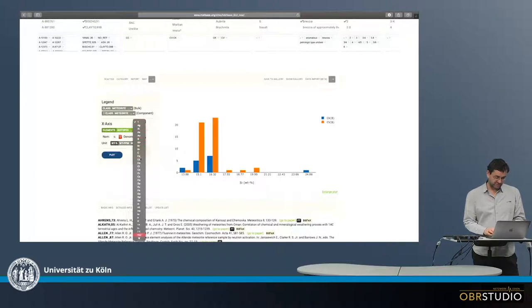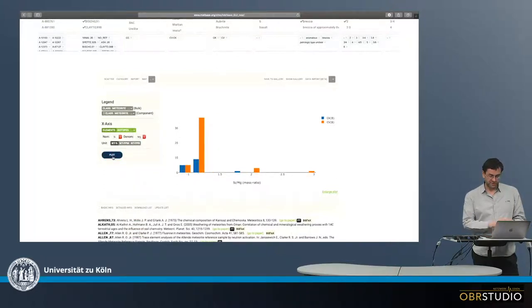I can also make ratios here. But the ratio is also just one line. Looks like this. So this would be examples of category plots.